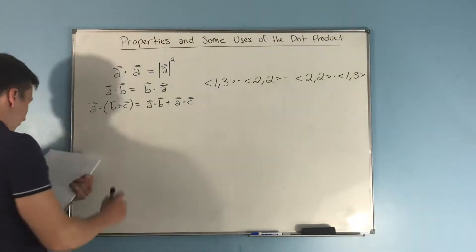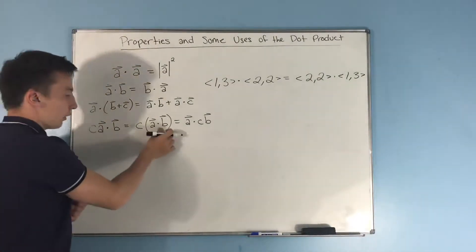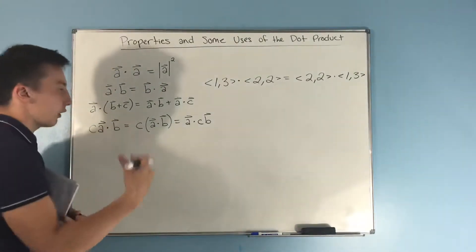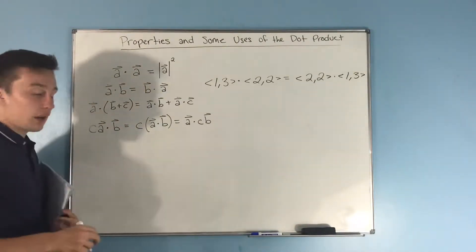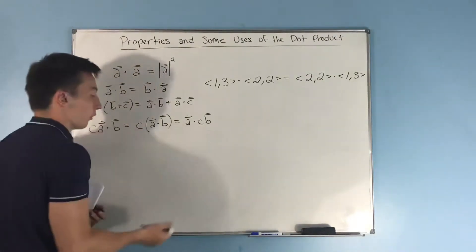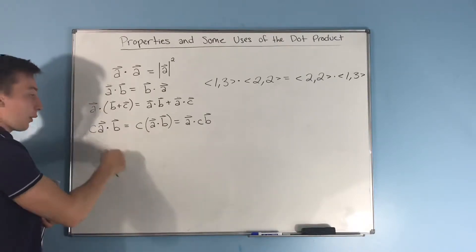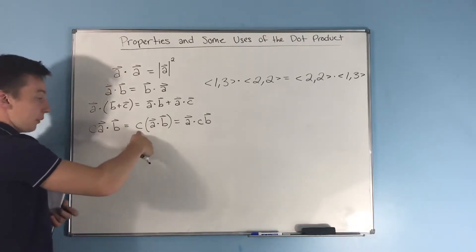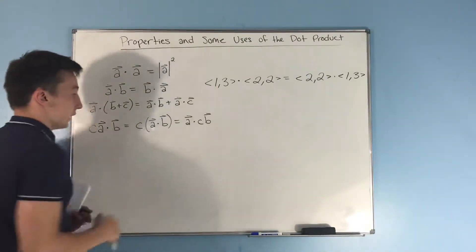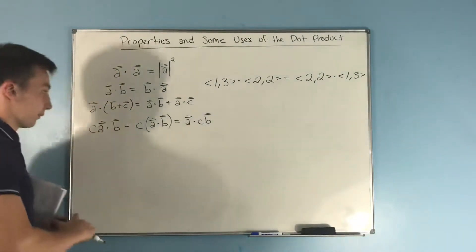Next, we have more of kind of just moving this dot around with a constant, or a scalar rather, c. C is a scalar here. You can see it doesn't have the vector symbol over it. And we can put this scalar anywhere. It can be attached to a and then you can dot it with b. It can be outside of the dot product. It can be a dot c times b. You're still going to get the same exact thing.